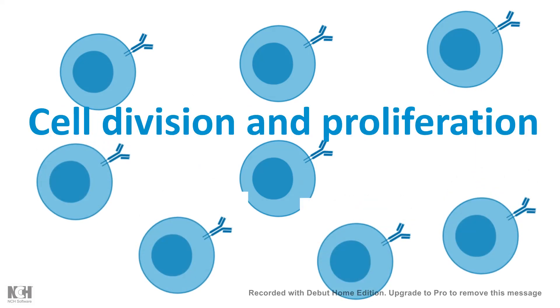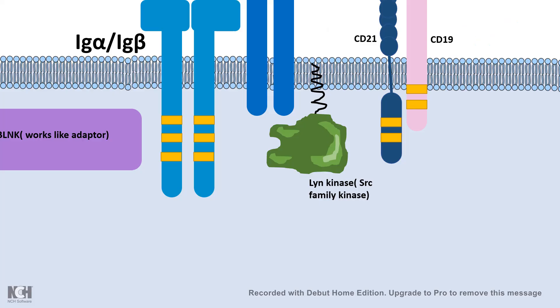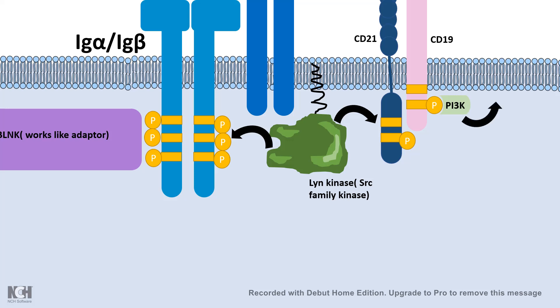That is the cellular outcome of the signaling. Now let's talk about a different pathway. Lyn kinase can also phosphorylate the ITAMs of CD21 and CD19. These phosphorylated residues serve as a docking hub for kinases like PI3 kinase. PI3 kinase can then convert PIP2 to PIP3, and PIP3 is a docking site for the important kinase AKT.